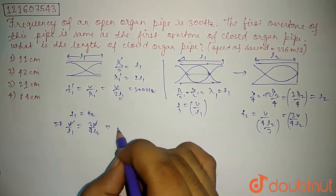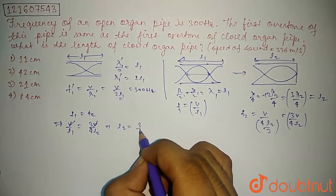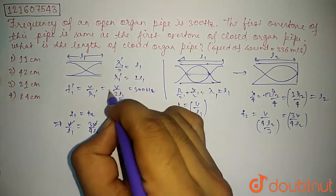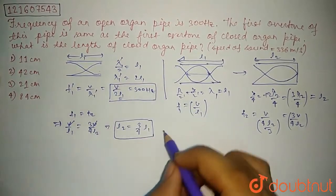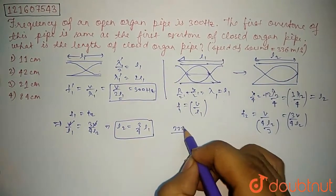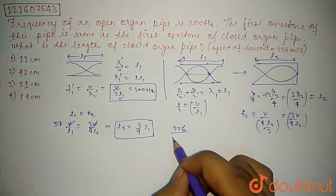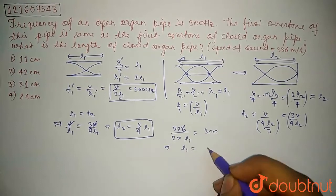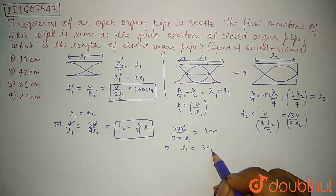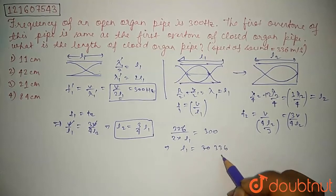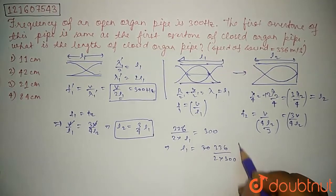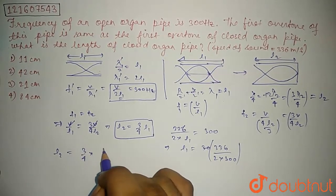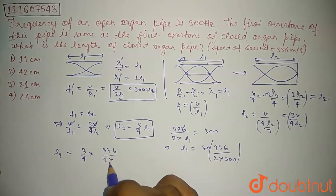That implies L2 is equal to 3 by 4 L1, and we can see L1 here. L1 is equal to 336, sound speed, by 2 into 300. That implies L1 is equal to... L1 is equal to 336 by 2 into 300. L2 is equal to 3 by 4 times 336 by 2 into 300.